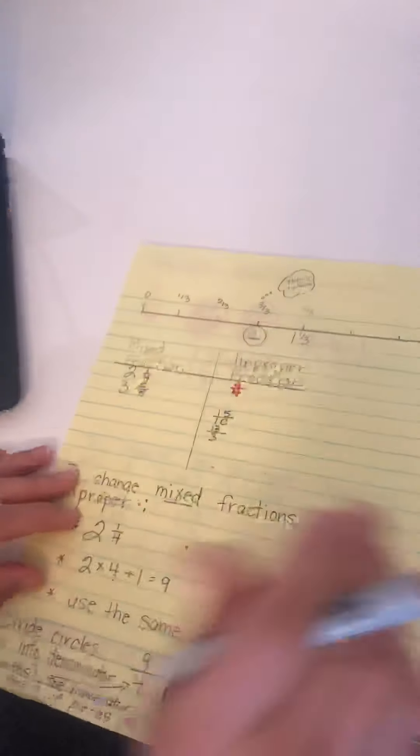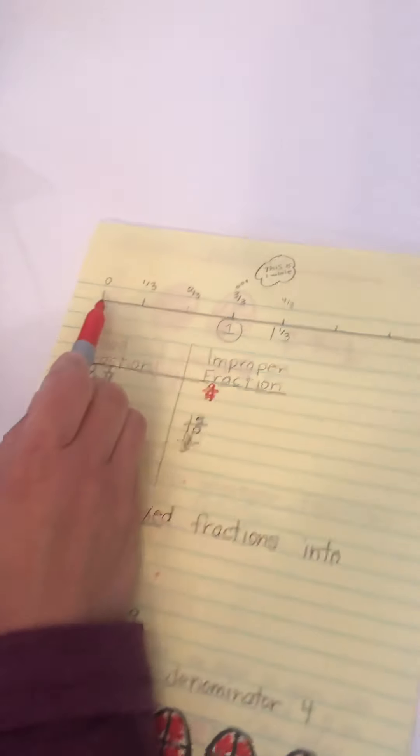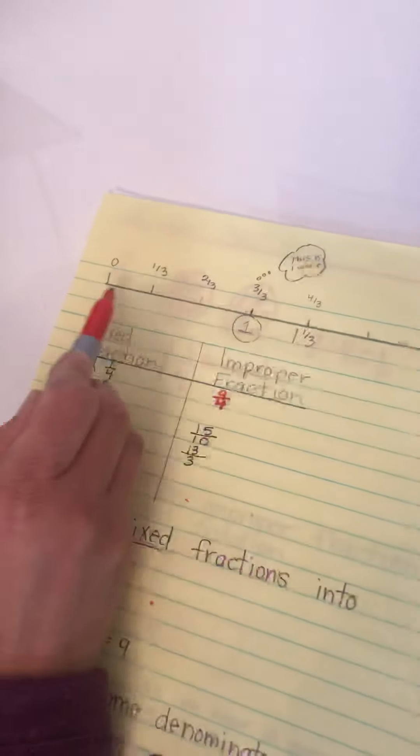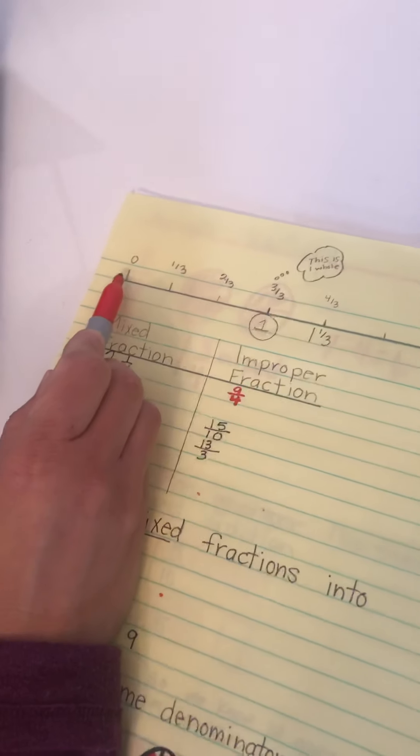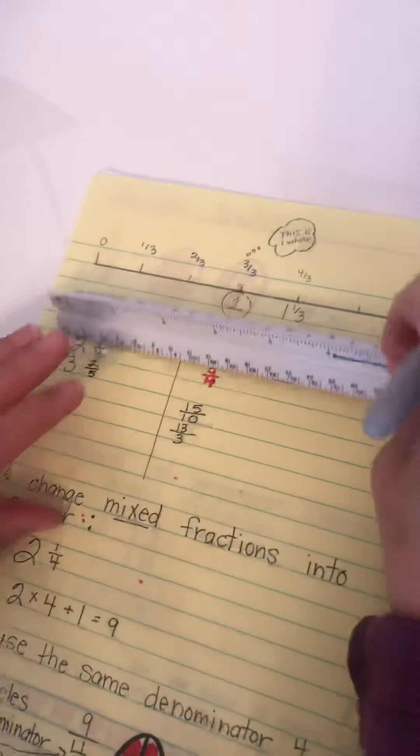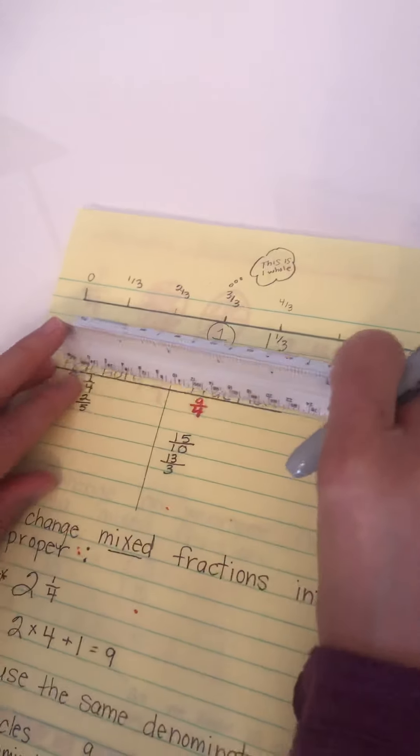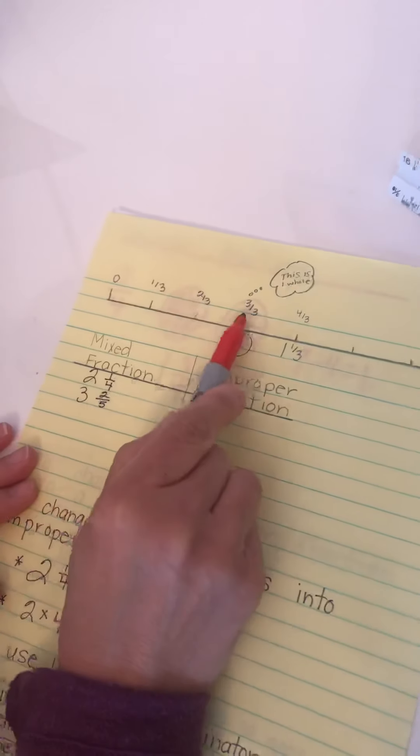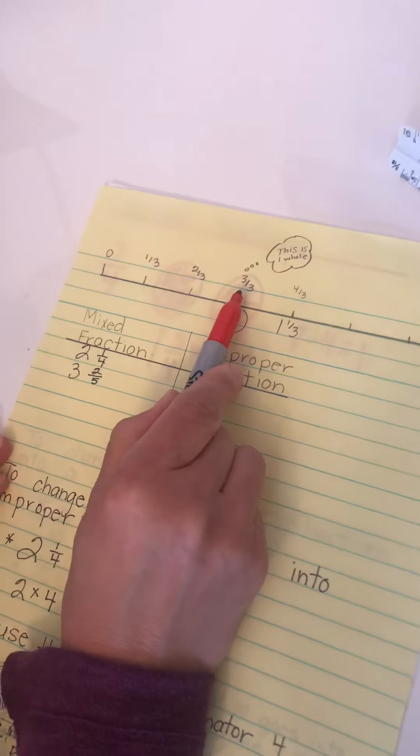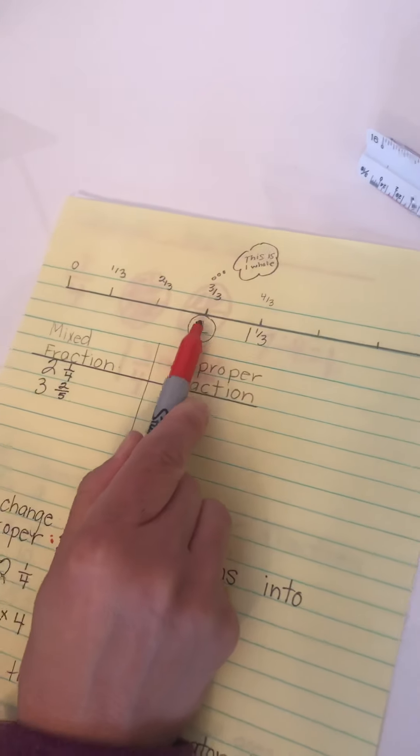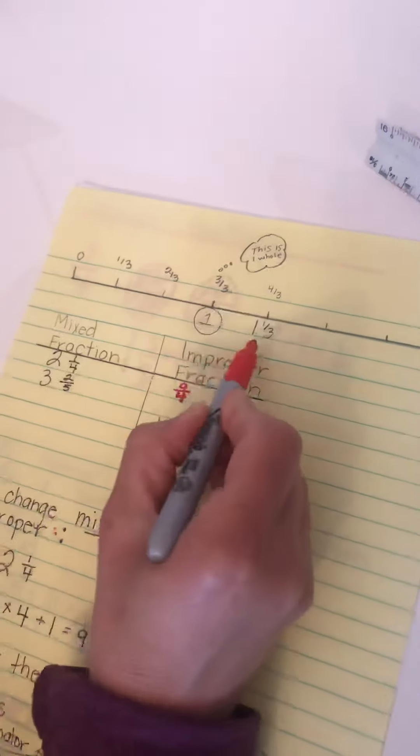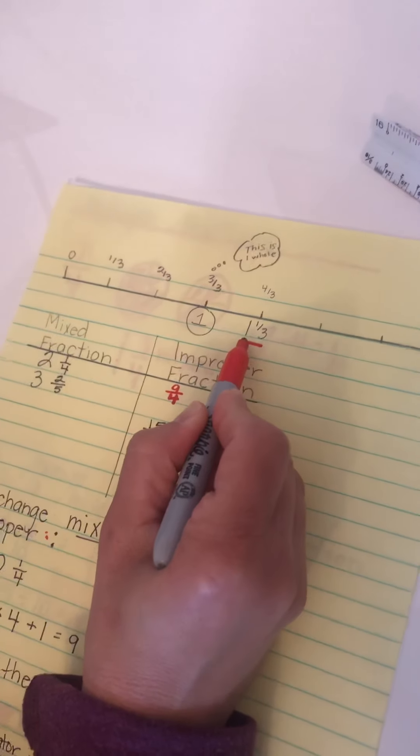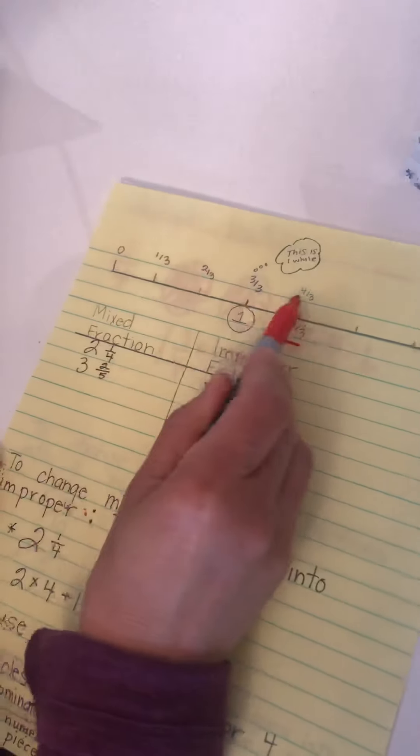I was looking at the work that the grade fives had to do, and they have a number line here divided into thirds. So I went ahead and used my ruler, and when you're dividing a number line, make sure that you're doing equal spacing. I have one third, two thirds, three thirds. We know that three thirds equals one whole, so this is actually one whole. And they wanted you to show one and one third, it's right here. So that's the mix. The improper would be four thirds because one, two, three, four thirds.